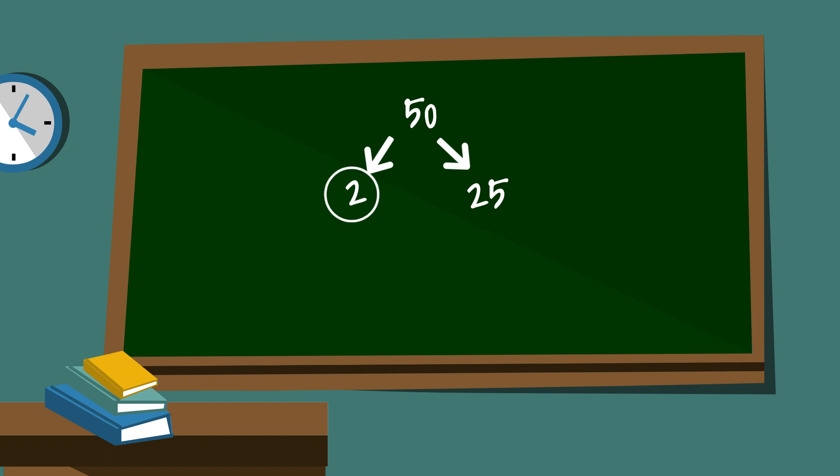I will circle the 2 because it is prime. Next, 5 times 5 equals 25 and I will circle both 5's because they are prime. So the prime factorization of 50 is 2 times 5 times 5, or here it is in exponential form.